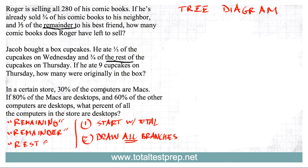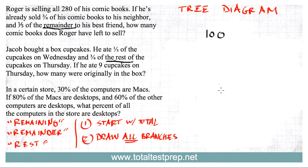In a certain store, 30% of the computers are Macs, 80% of the Macs are desktops, and 60% of the other computers are desktops. We could have said '60% of the rest' or '60% of the remaining' — that's how you know you can use a tree diagram. What percent of all the computers are desktops? We'll start with the total. No actual numbers are given, so rather than using a variable we can pick a number. We can assume there are 100 computers in the store.